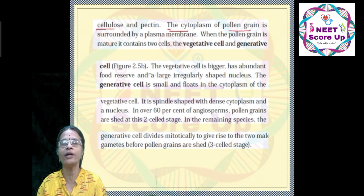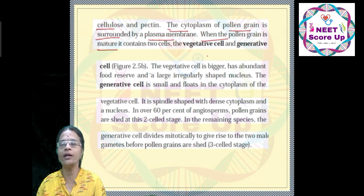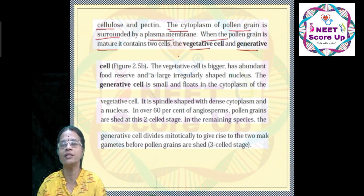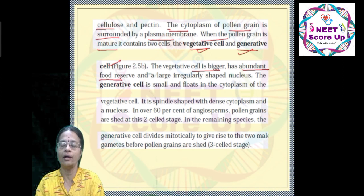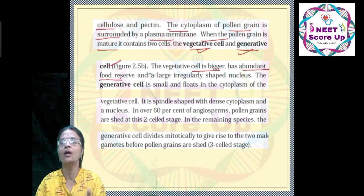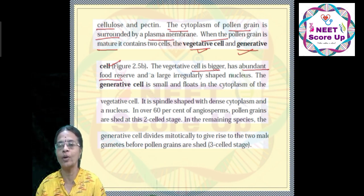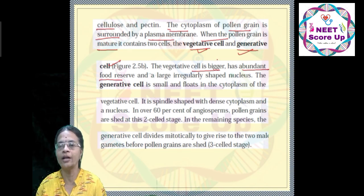The cytoplasm of the pollen grain is surrounded by a plasma membrane. When the pollen grain is mature, it contains two cells. The pollen grain is a male gametophyte with two cells: one is the generative cell, and the vegetative cell is bigger with an abundant food reserve. If you are interested in the nourishment of the anther, the tapetum is the developing anther's nourishment tissue — that is why pollen grain receives nourishment from the tapetum.